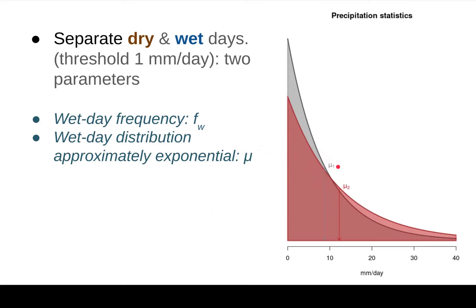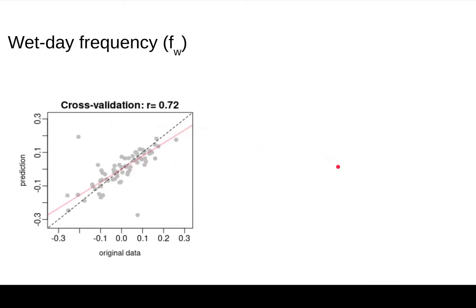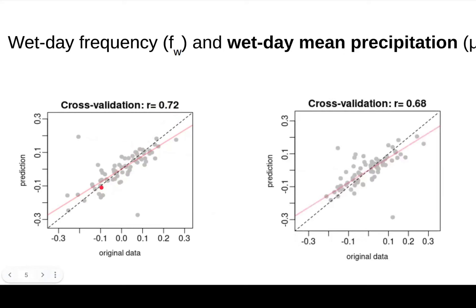We want to downscale these two parameters to a local scale. We can do that using ERA5 reanalysis over a large region. We have daily rainfall and can estimate the wet day frequency in the large region and see how it relates to the wet day frequency and mean at local rain gauge data points. The cross-validation correlation is 0.72, so the downscaling model does a fairly good job. The same applies to the wet day mean precipitation as well.